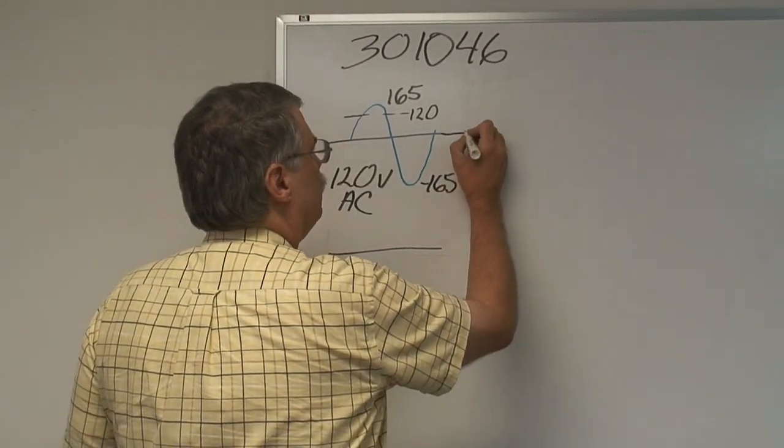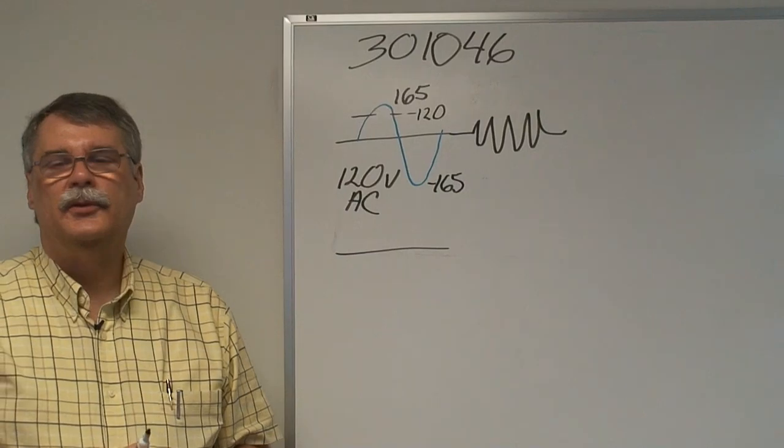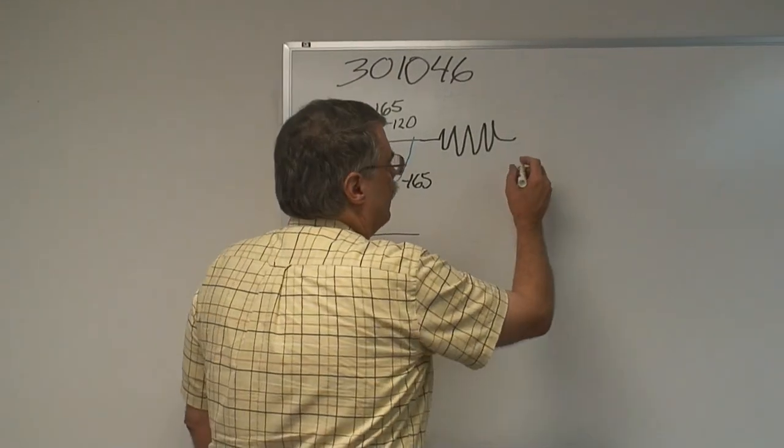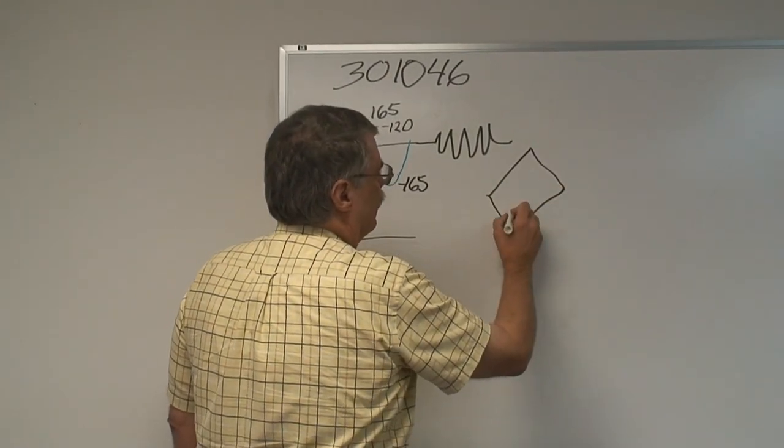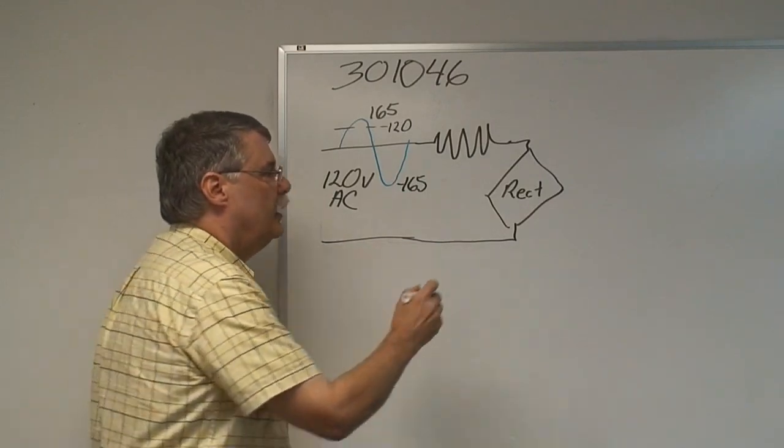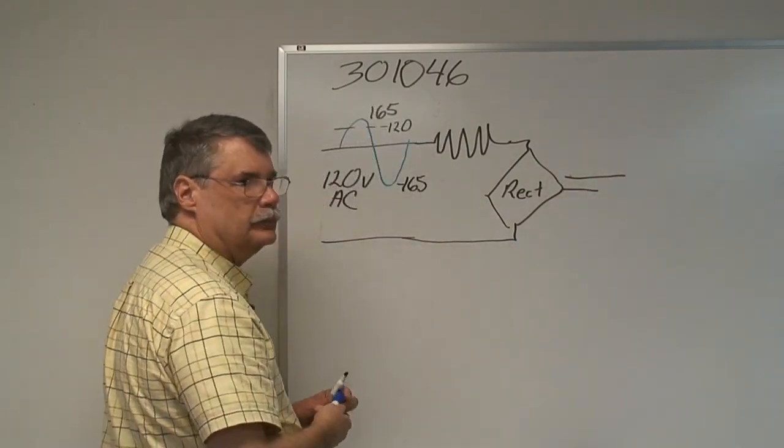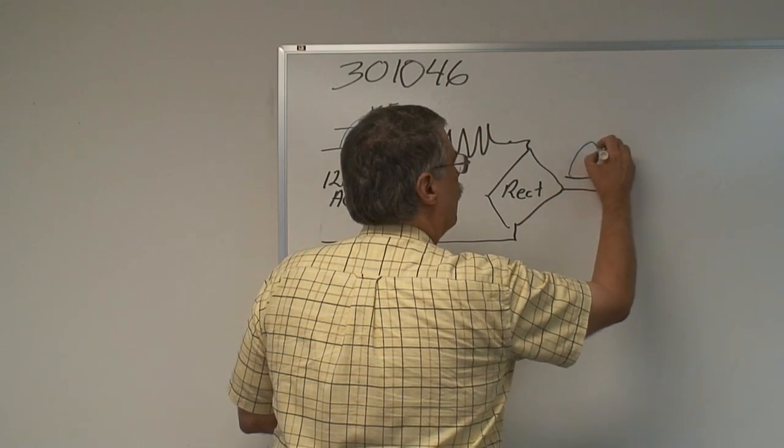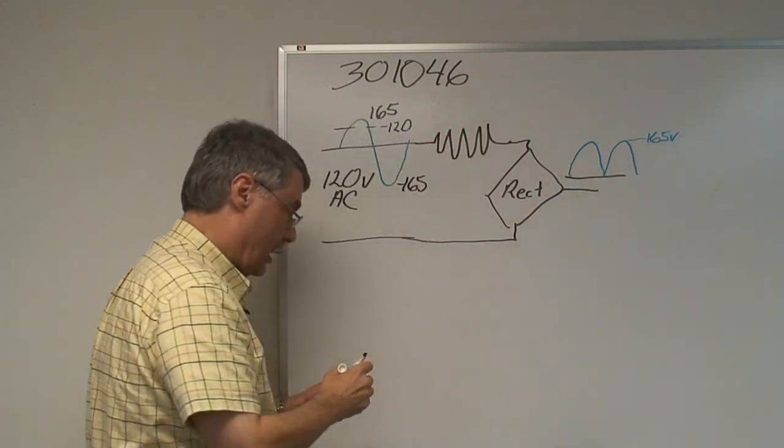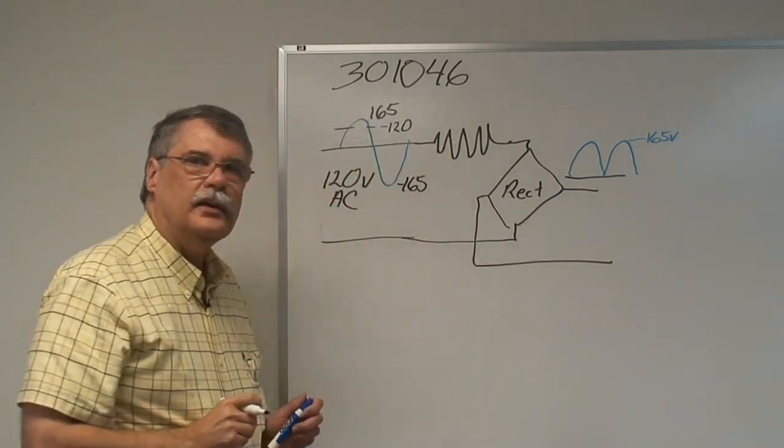The 3010-46 has a current limiting resistor. There's a large resistor about the size of this marker that's used in conjunction with the gun driver to set the holding voltage of this device. Then there is a device rectifier that takes the AC, the current from the power line, and converts it into DC pulses. They're all in one direction, and they all peak at 165 volts.